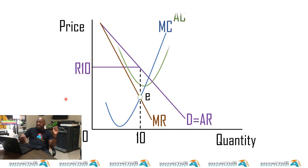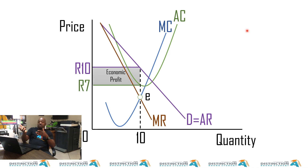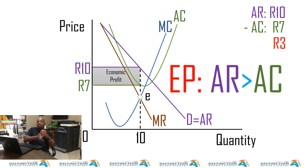We cannot tell until we introduce the average cost curve. And as you can see, I introduced the average cost curve below 10 — our average cost is 7. This is good news. We are selling for 10 rand and it costs us 7 rand. We are making an economic profit. The way to prove it is AR minus AC: 10 minus 7 equals positive 3. So this firm is making an economic profit because AR is greater than AC.